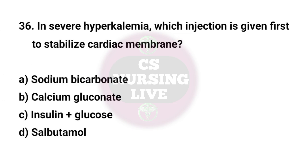Question No. 36. In severe hyperkalemia with cardiac risk, which injection is given first to stabilize the cardiac membrane? Right answer is B. Calcium gluconate.